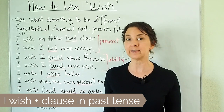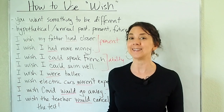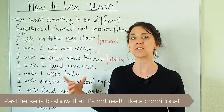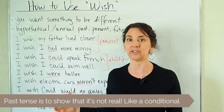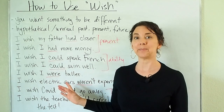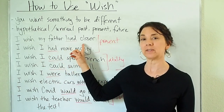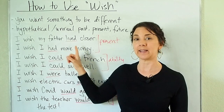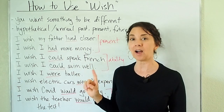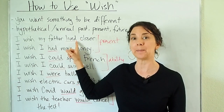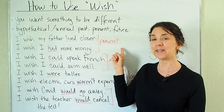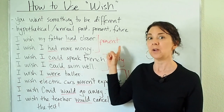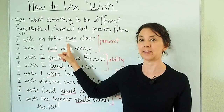And the reason for the past tense verb is not because we're talking about the past — it's because we are talking about a conditional. For example: I wish my father lived closer. Here we're going to use the verb in the past tense. We're not talking about the past; we're talking about the present. But because this is an unreal situation, we have to use the verb in the past.